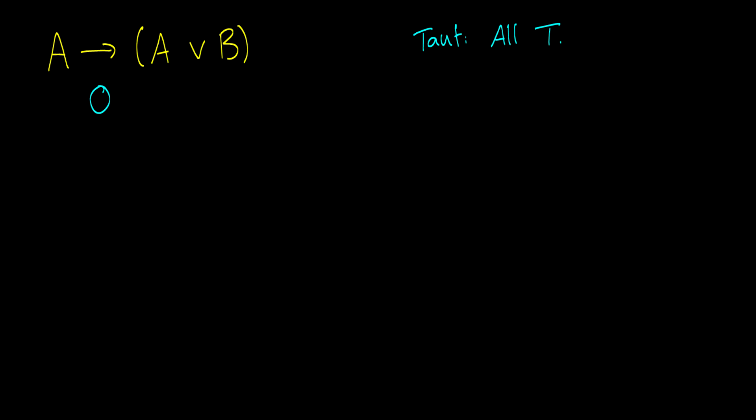Okay, so we suppose the sentence is false, and now what we have to do is we have to create truth values that make it false. So we know an arrow is only false when the antecedent is true and the consequent is false, and a disjunction is false only when both of its disjuncts are false.